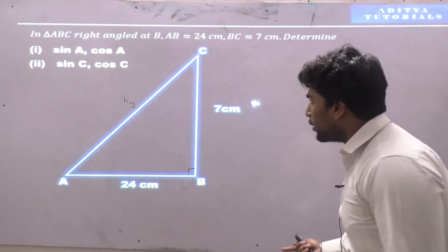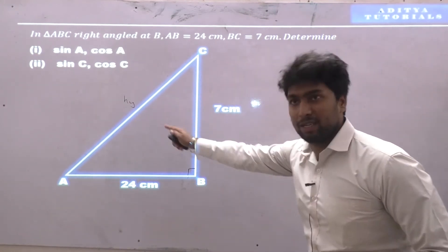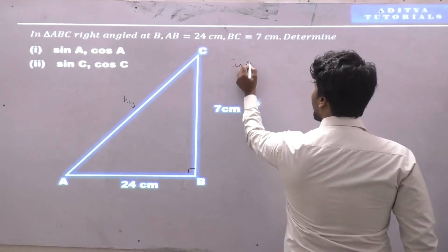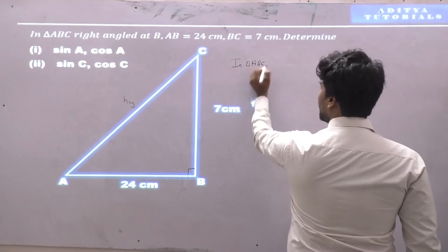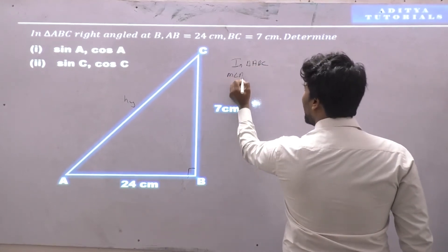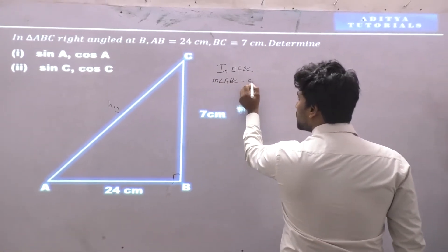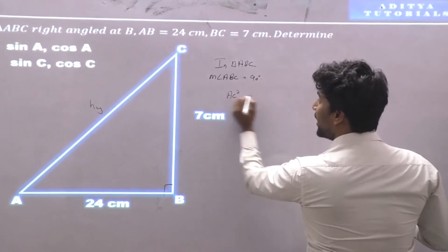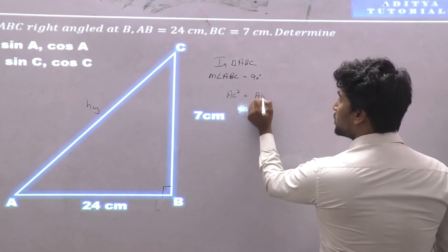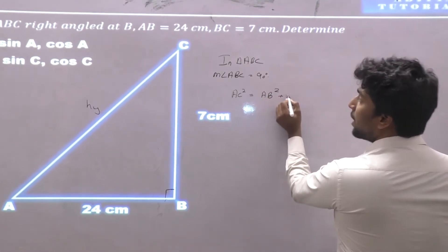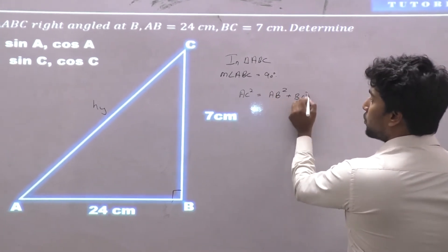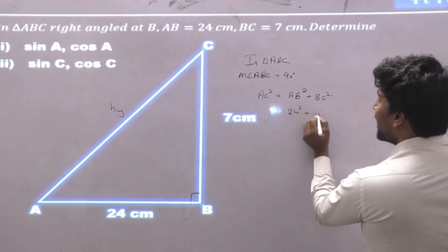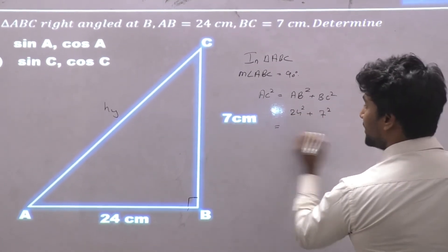We have two sides given — can I find the third? Yes, using the Pythagorean theorem. In triangle ABC, angle ABC is equal to 90 degrees, so AC square is equal to AB square plus BC square. AB's square is 24 squared, plus BC's square which is 7 squared.